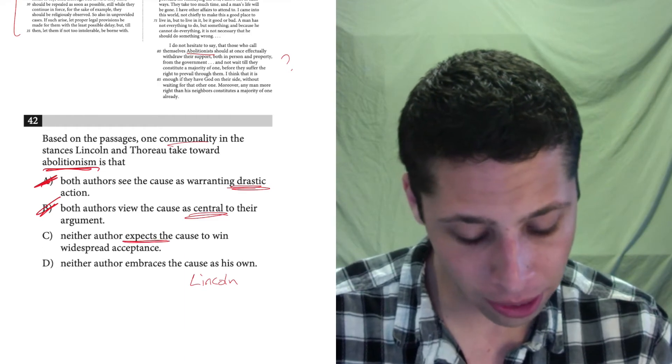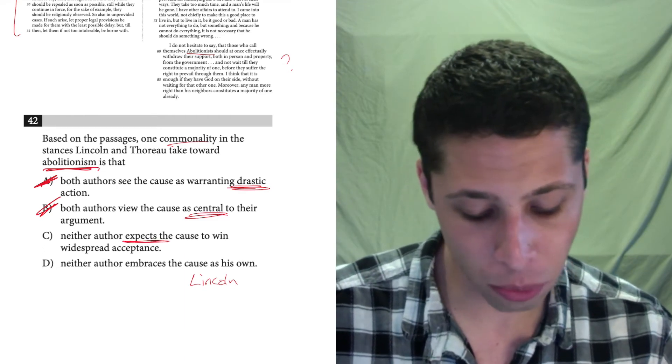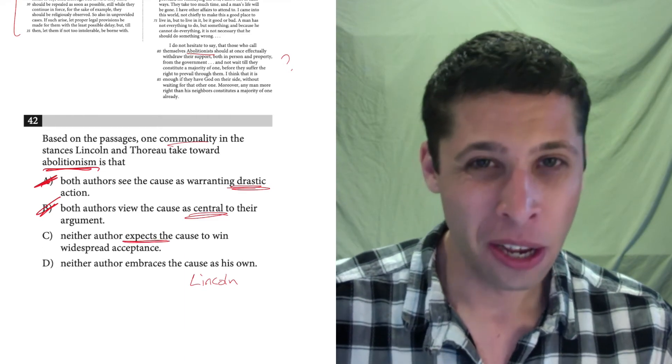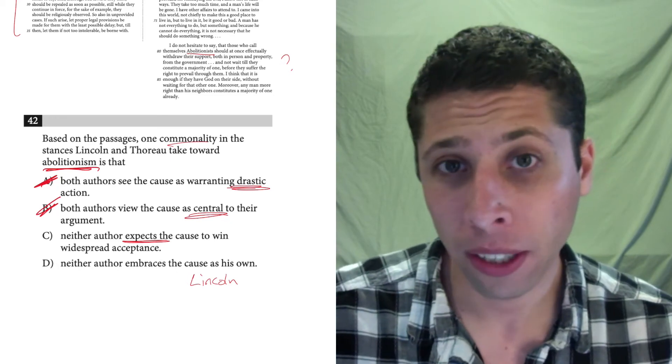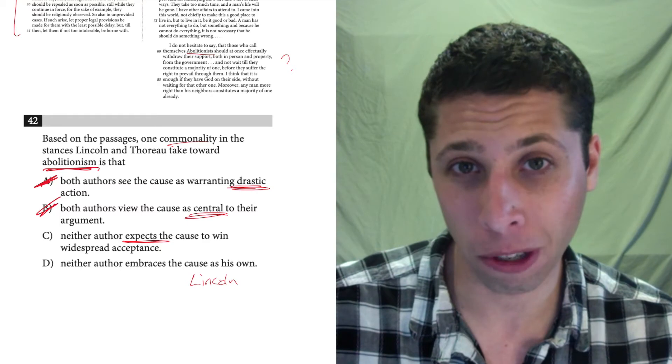Neither author expects the cause to win widespread acceptance. Well, they didn't really predict anything. They didn't say that we predict that abolitionism won't be popular. So, that's not great. I know what kind of words I'd be looking for to prove C, and I didn't see any of them.